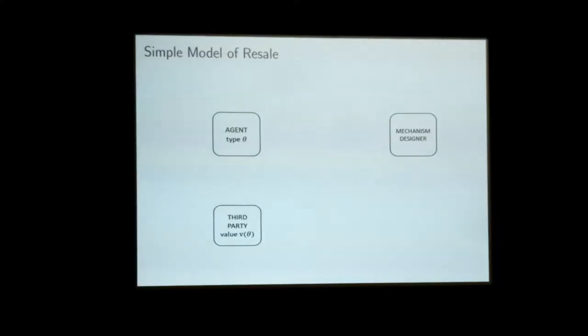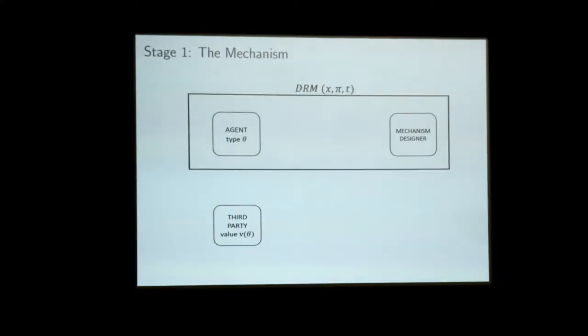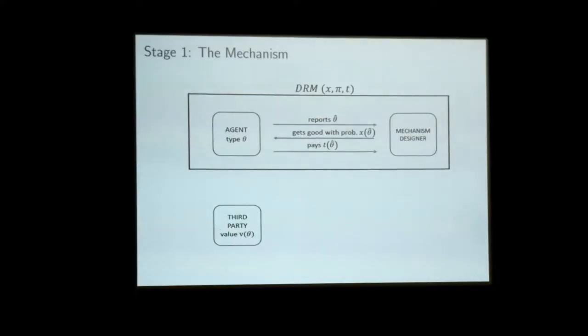To make things concrete, I'm going to work with a simple model today — it's a simplified version. There's just one seller with a single good, a single agent in the mechanism who has private information theta about the value for the object, and there's going to be a single third party in the aftermarket with value V. There's a version of the revelation principle, so we can look at direct mechanisms here. The agent will report a type to the mechanism and receive the good with some probability X — that's the allocation rule — and pay some transfer T. So far, that's completely standard.